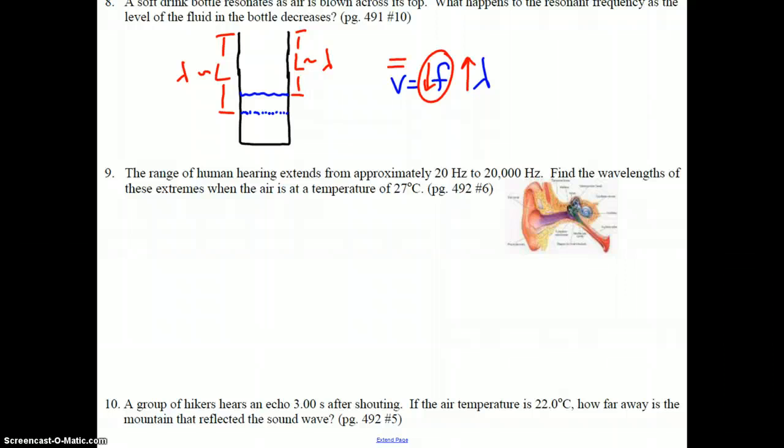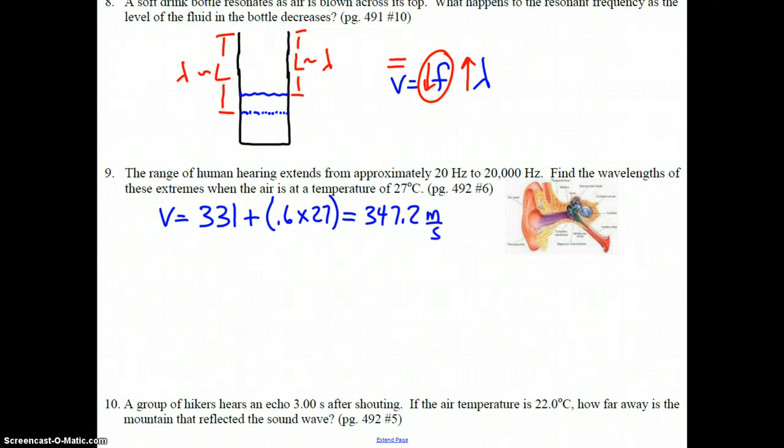The first thing that we need to do is find the speed of sound at 27 degrees Celsius. And so we take our 331 meters per second at STP. We're going to add 0.6 times the 27 degrees above STP. When we do the math there, we get a speed of sound of 347.2 meters per second. Take our answer out to extra digits there.